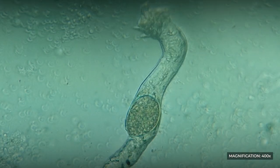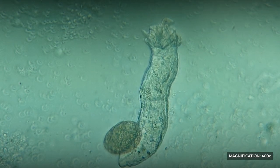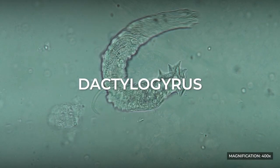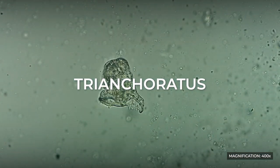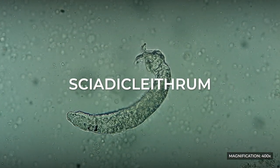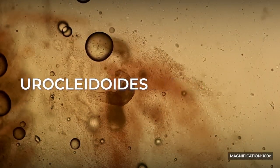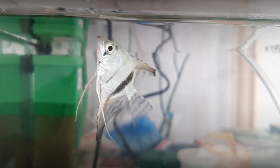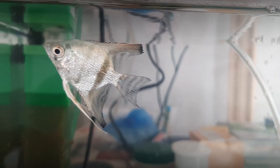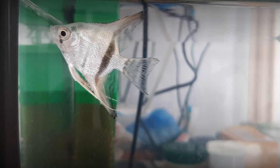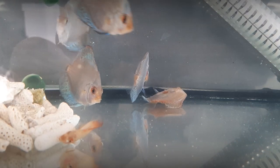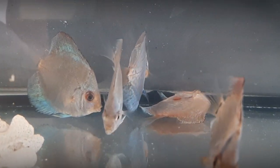In contrast to viviparous skin flukes, gill flukes are egg-laying parasites. Gill flukes belonging to different genera — Dactylogyrus, Trianchoratus, Sundacleidus, Urocleidoides, Diclebothrium — differ in size and in the structure of their attachment disc. All gill flukes cause respiratory problems in fish. Infected fish exhibit widely open gill covers, rapid breathing, and become either lethargic or stressed. Gill flukes pose a significant danger to young fish and often lead to mass mortality.